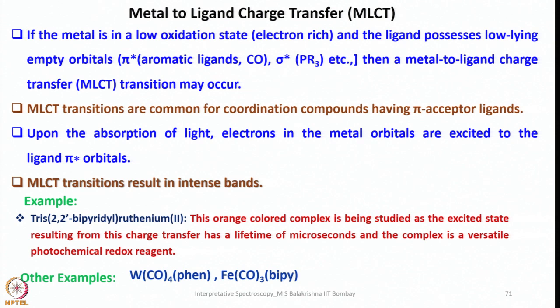Metal to ligand charge transfer results in intense bands. An example is the tris(2,2'-bipyridyl)ruthenium compound. This is an orange-colored complex being studied because the excited state resulting from this charge transfer has a lifetime of microseconds, and the complex is a versatile photochemical redox reagent. Other examples include a phenanthroline ligand of tetracarbonyl tungsten and also a 2,2'-bipyridyl complex of iron tricarbonyl.